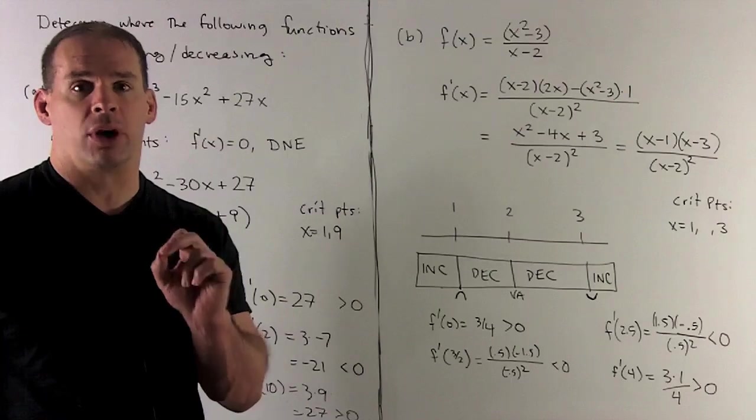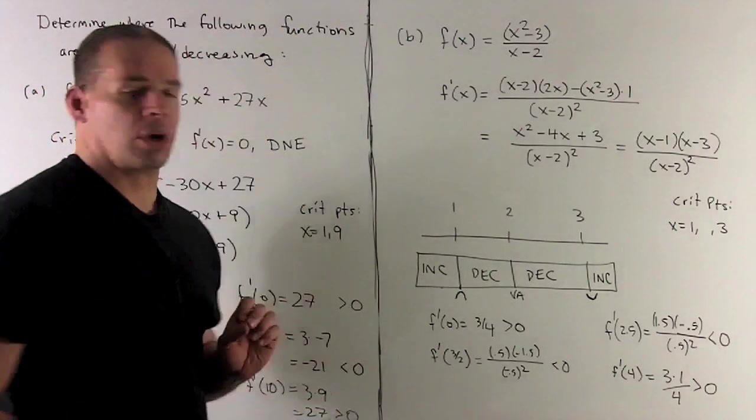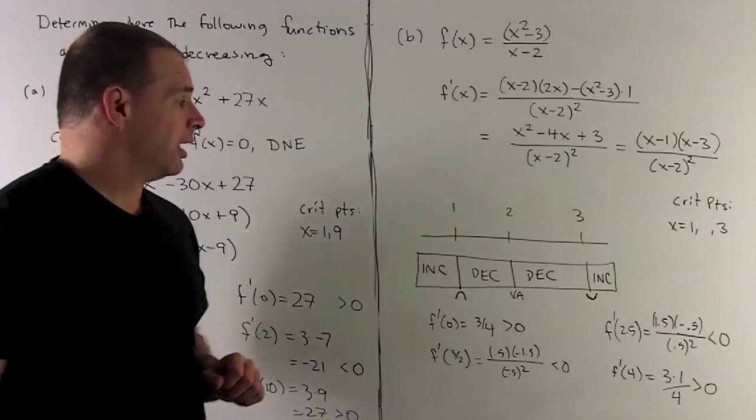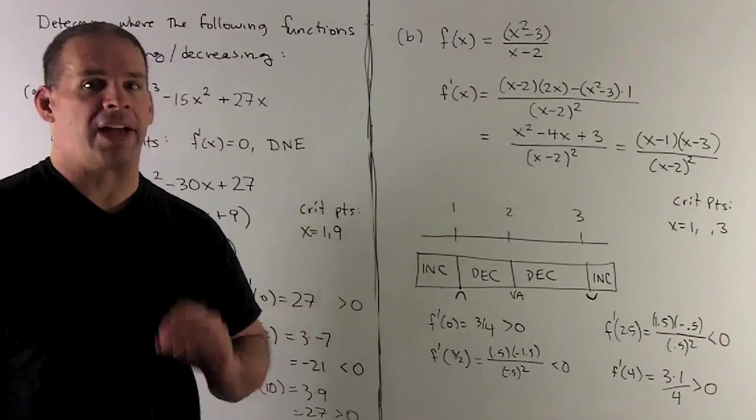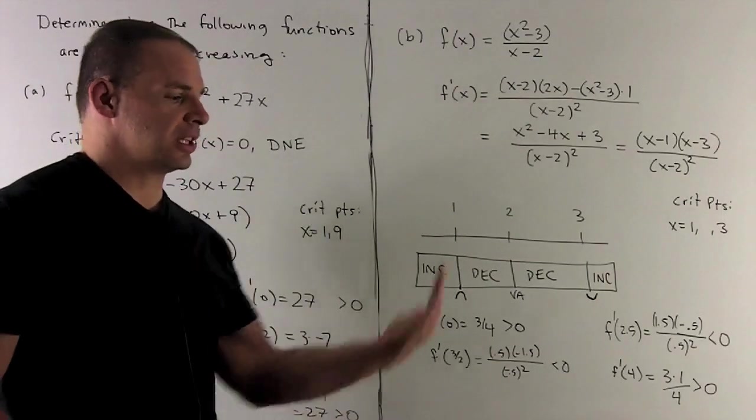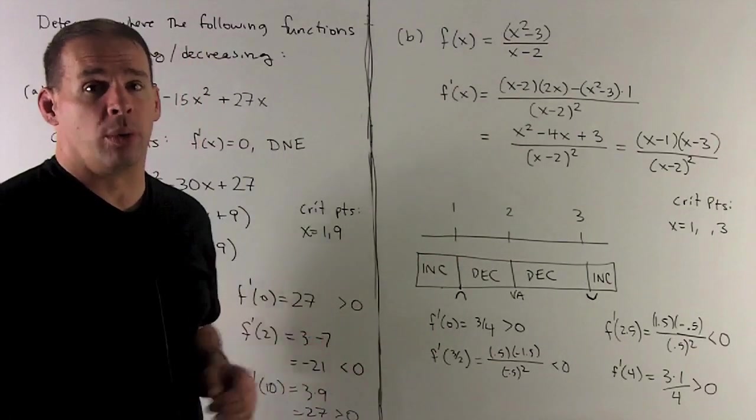If we wanted to go a little bit further, note at 1, we're going from increasing to decreasing. So that's a local maximum. At 2, vertical asymptote. At 3, we're going from decreasing to increasing. So that'll be a local minimum.